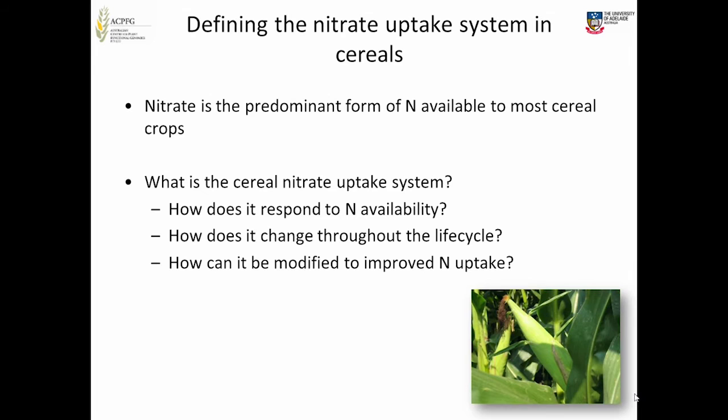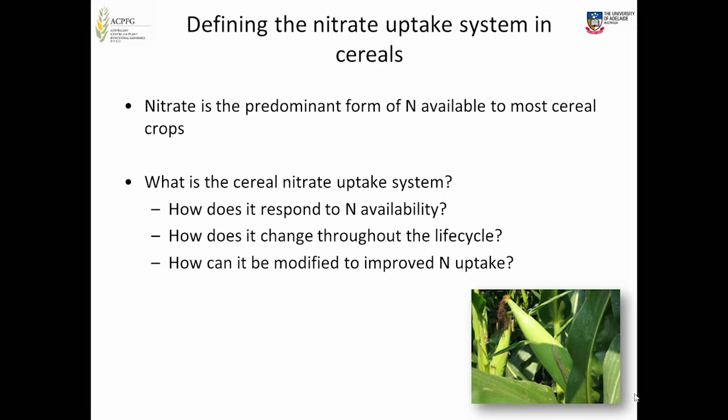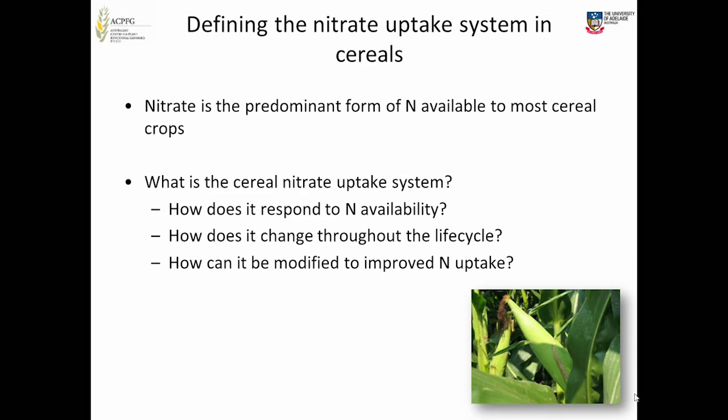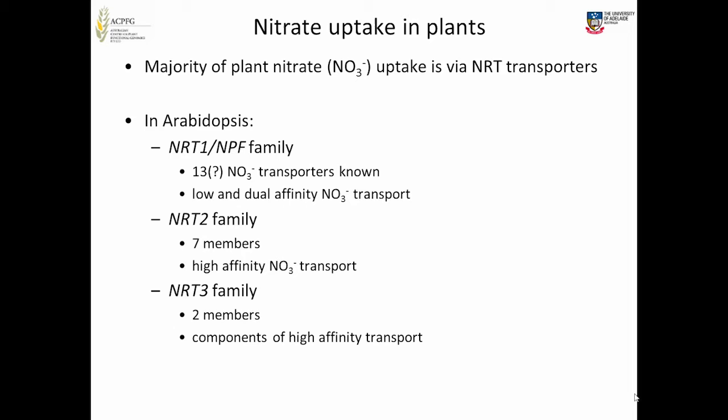How does it respond to nitrogen availability? How does it change throughout the life cycle? And ideally, how can it be modified to improve nitrogen uptake, or what do we look for in plants that have higher uptake efficiency? In terms of nitrate uptake by plants, most of what we know is based on work with Arabidopsis. We're starting to move outside of Arabidopsis, but it's still the easiest plant to work with.